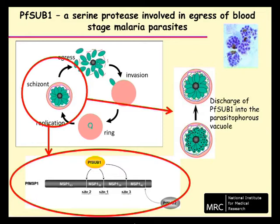Some time ago, the group of David Baker at the London School of Hygiene and Tropical Medicine showed that inhibitors of a parasite cyclic GMP-dependent protein kinase called PKG very efficiently block egress. In the light of that observation, the objective of this study was to understand how inhibitors of PKG inhibit egress, and how that inhibition relates to what we know about the role of SUB1 in egress.